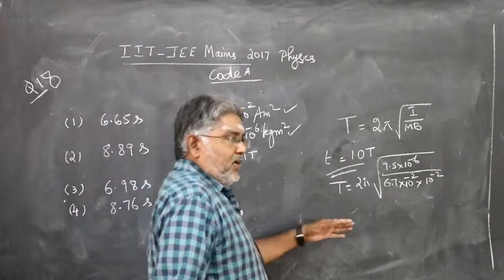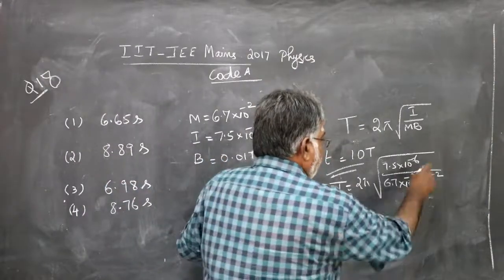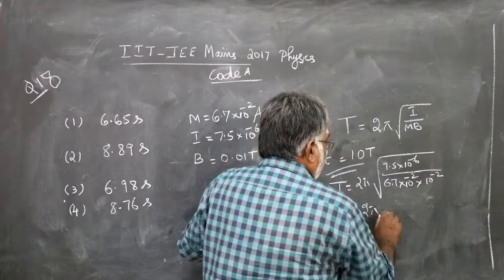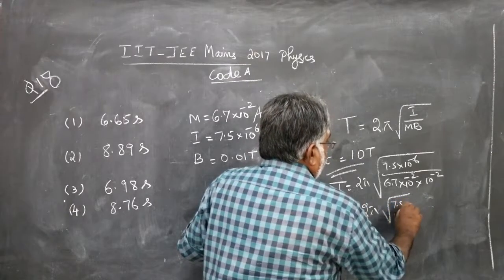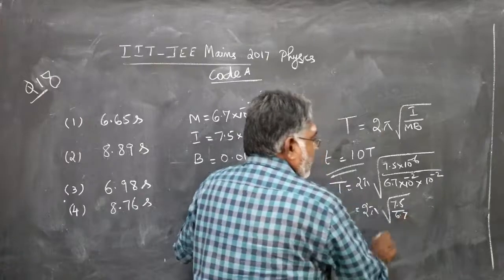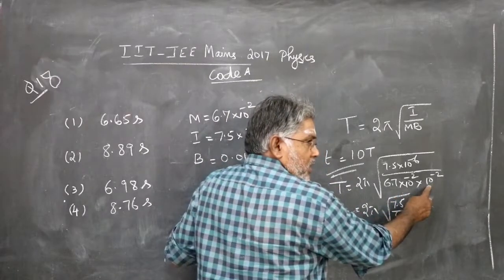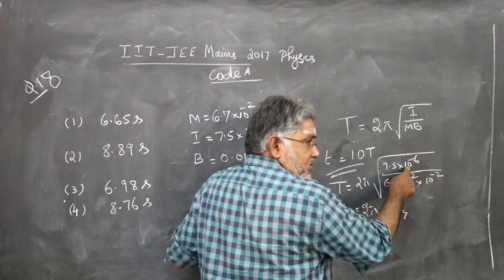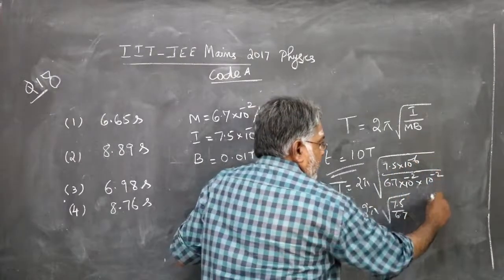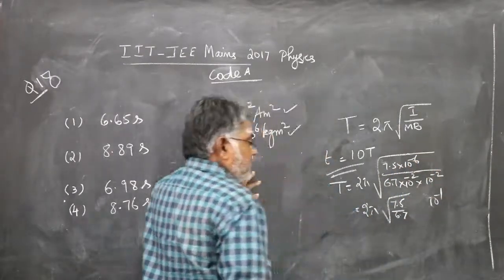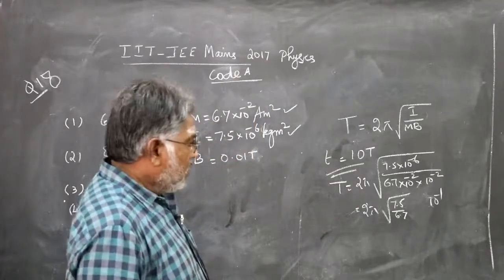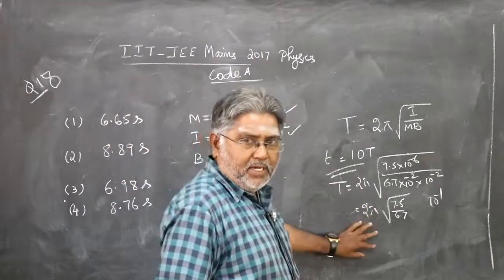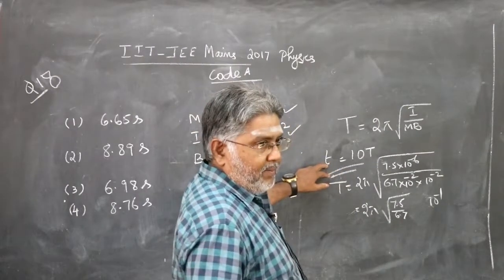You can simplify this. Take the powers of 10 outside: 2π√(7.5/6.7), where 10⁻⁴ in the denominator goes to the numerator as 10⁴. With 10⁻⁶ already there and 10⁻², taking it outside the square root gives 10⁻¹. Simplify this to get the time period of oscillation. Multiply by 10 to get the required time.